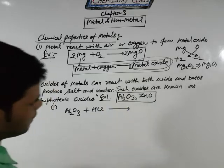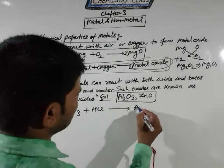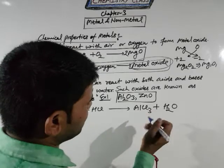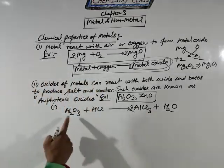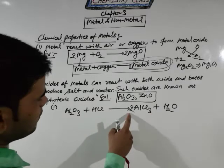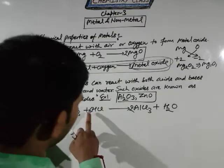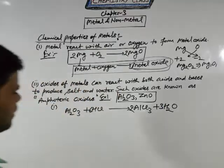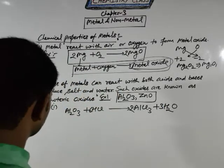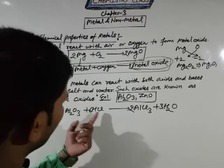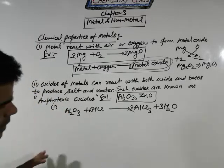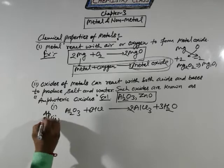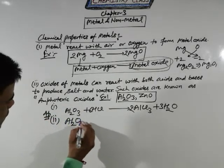First, we react this amphoteric oxide under acid conditions. In this case, Al₂O₃ reacts with HCl, and the product is AlCl₃ and H₂O. You can see here there is an odd number. If an odd number is there, you multiply by an even number. After balancing, you have 6 chlorine here, so multiply by 6 on the left side. Six hydrogen is there, but you have only 2 hydrogen, so multiply by 3. This gives us our balanced chemical equation.